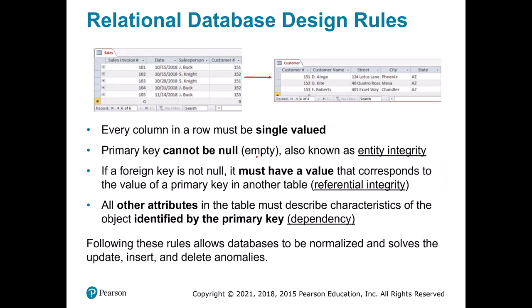Here are some key rules: every column in a row must have a single value, so we can't repeat values. Our primary key cannot be empty or null. If a foreign key is present, it must link to something that has a primary key — for example, you can't have a sale that doesn't relate to a customer. And everything in a table should depend on the primary key. Following these rules lets our databases be normalized and solves a lot of these problems. You won't be designing tables, but understanding these rules helps you understand how a table is actually set up.